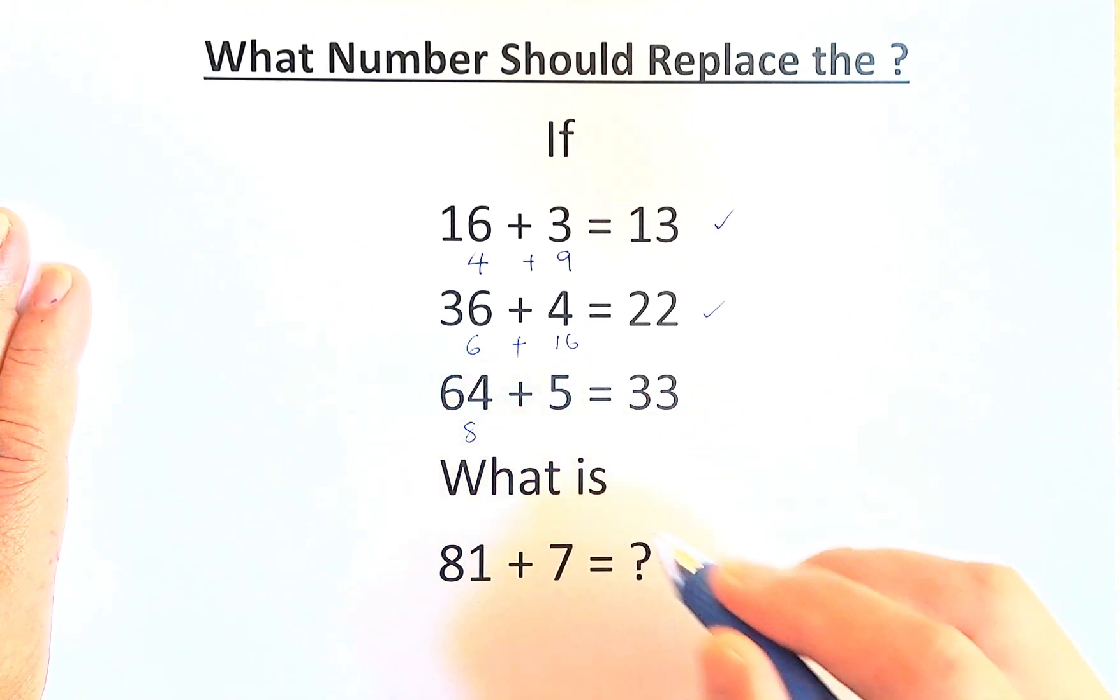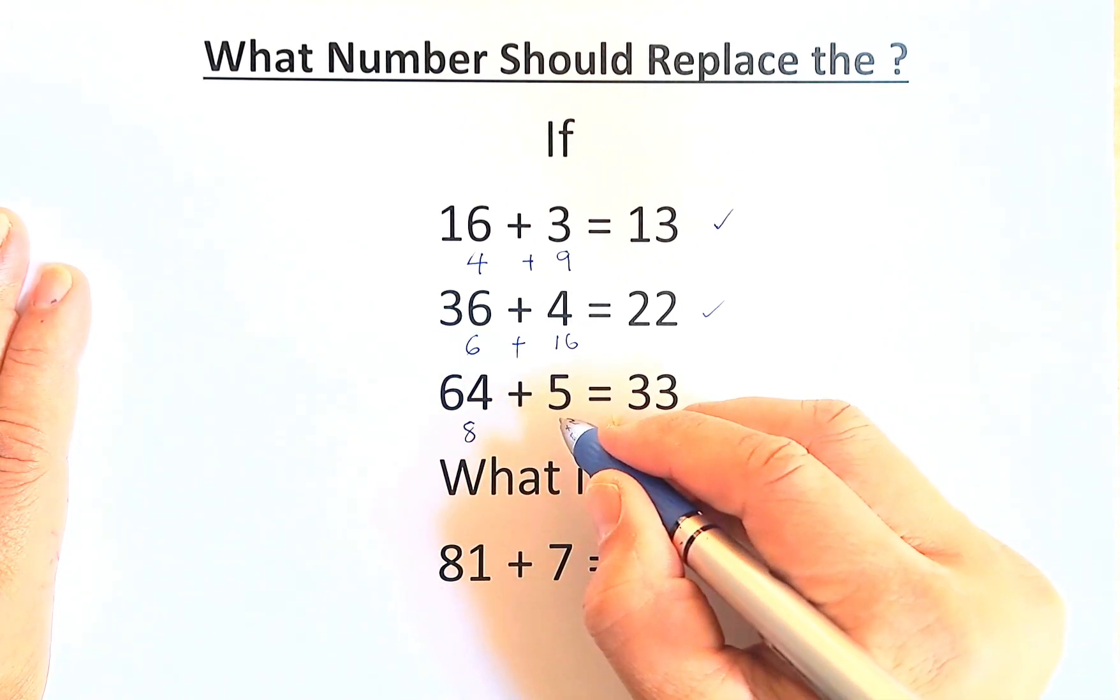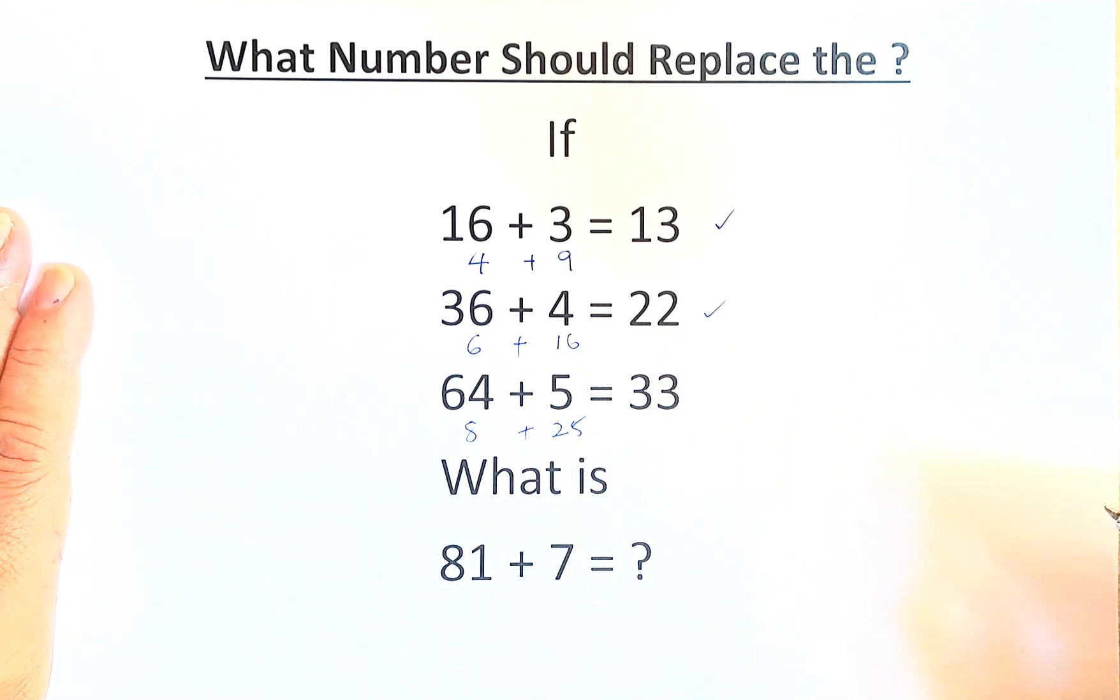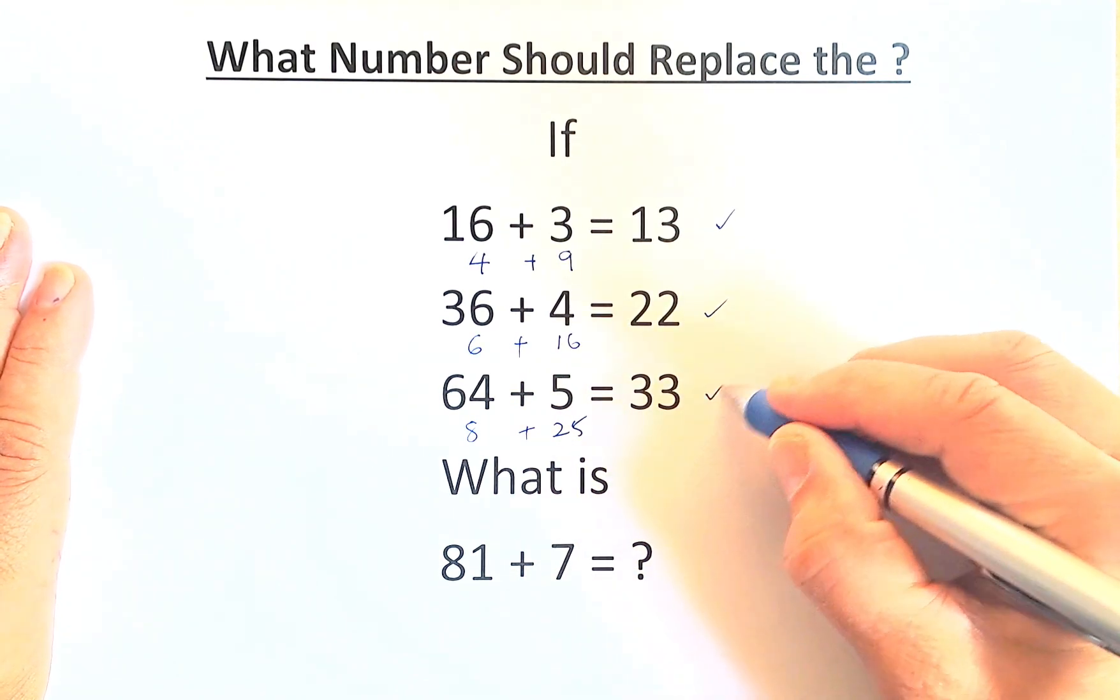In the third row, square root of 64 is 8. Square of 5 is 25. So, 8 plus 25 gives us 33.